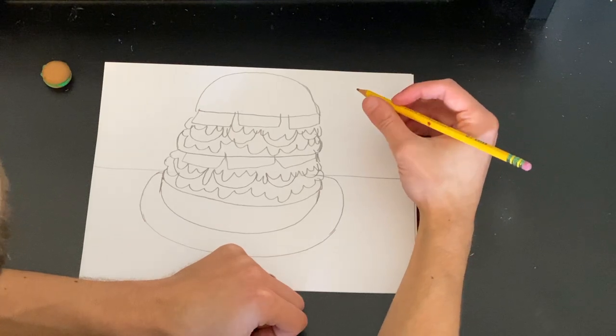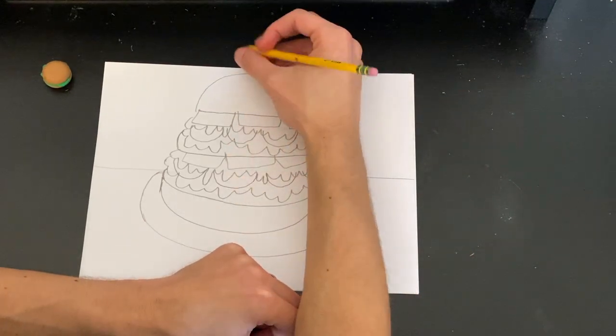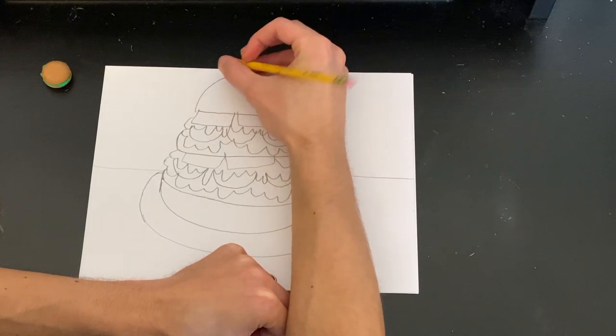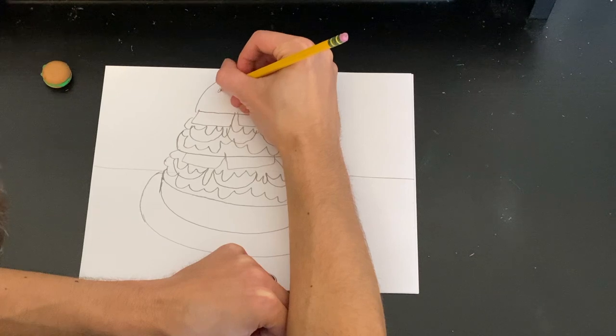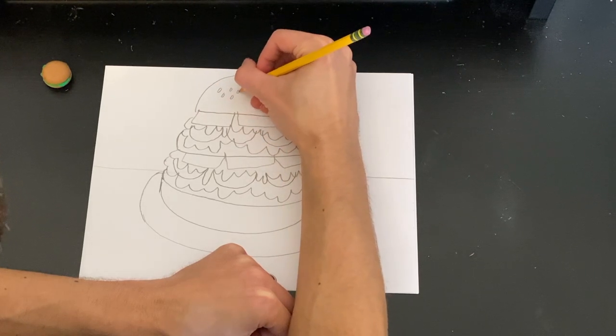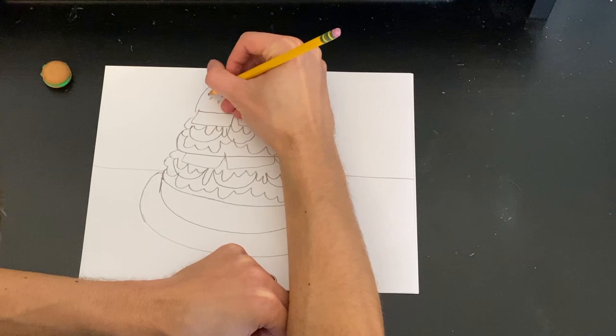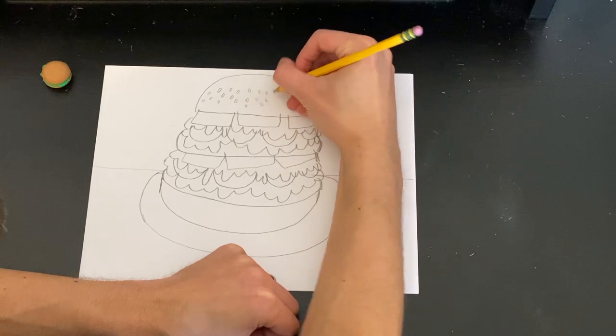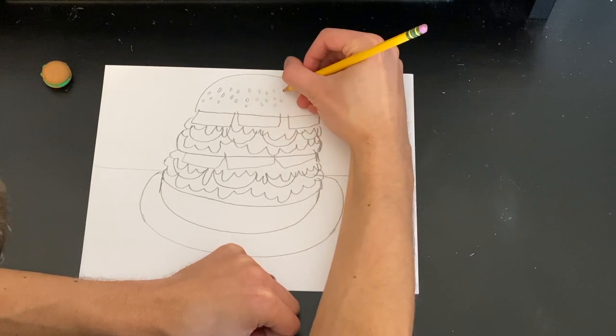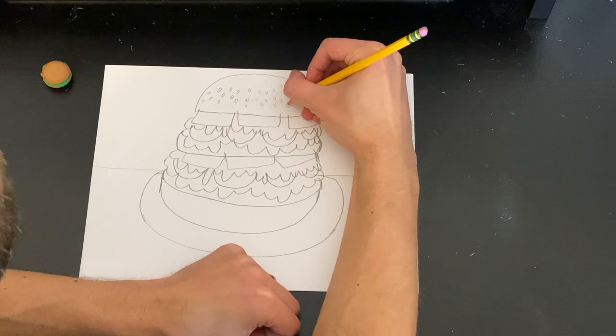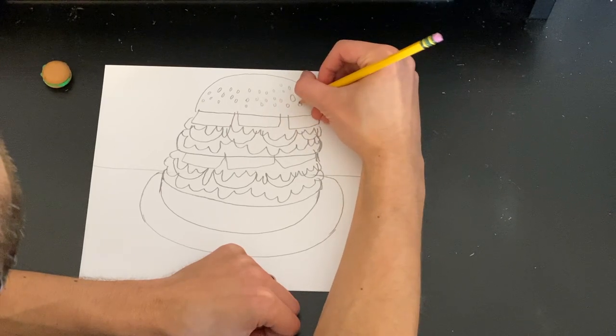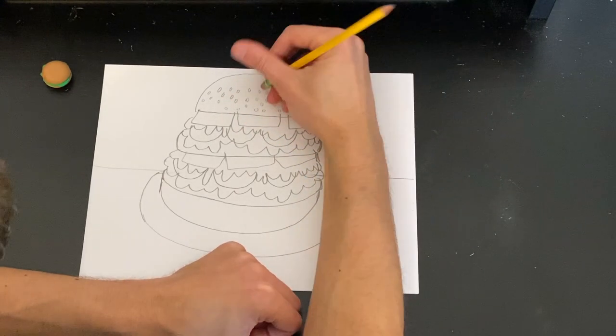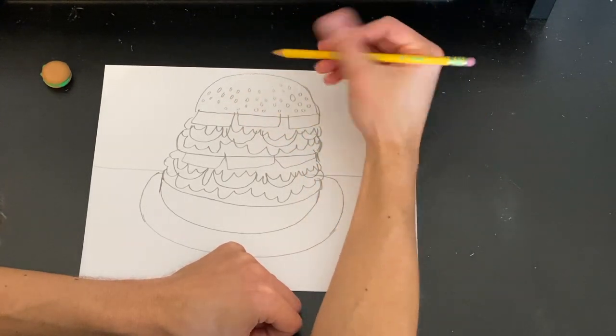And we need to add some details. Let's start from the top and work our way down now that we've created the whole of our burger. On the top, let's make it a sesame seed bun. To do that, let's just make some ovals like this. You can make as many sesame seeds as you want. It doesn't need to have sesame seeds if you don't want it to. Take your time. Your seeds could be big, they could be small, they could be more circular. Everybody's burger is going to look different and that is okay. If you make a mistake, you can always erase and redraw it.